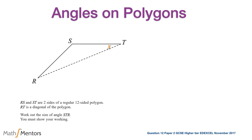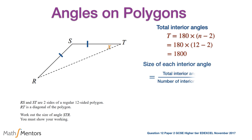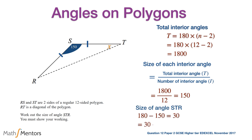In this example, a diagram shows part of a regular 12-sided shape. Sides RS and ST are equal and we must find angle STR. Using the formula T = 180 × (n − 2), the total interior angles on a 12-sided polygon is 1800 degrees. Dividing 1800 by 12 gives each interior angle as 150 degrees — this is angle RST. Triangle RST is isosceles, so the base angles are equal. Subtracting 150 from 180 gives 30, and dividing by 2 gives 15 degrees, which is the size of angle STR.